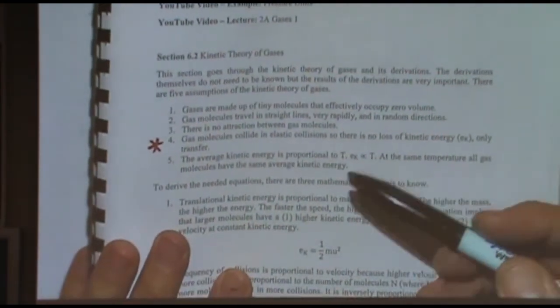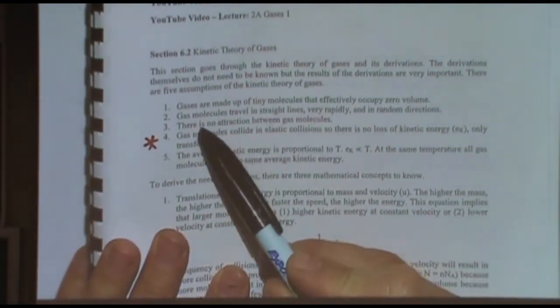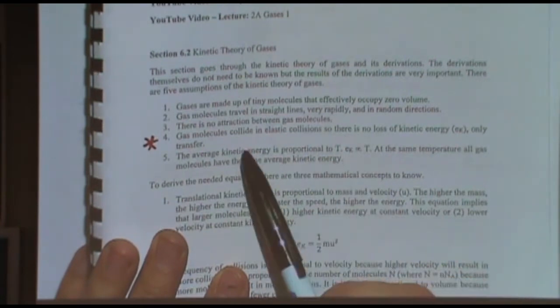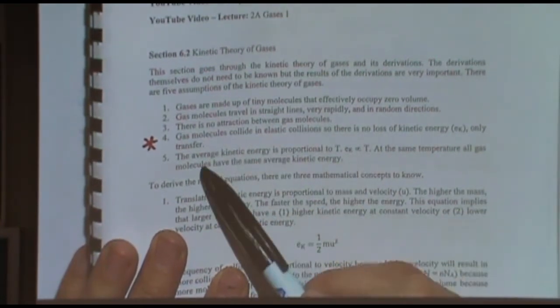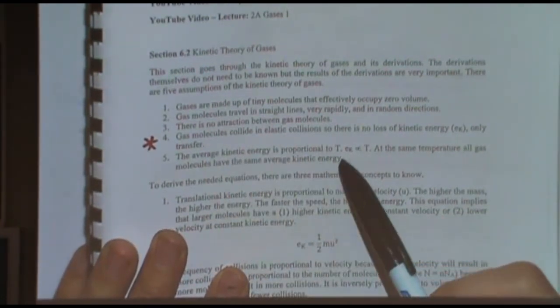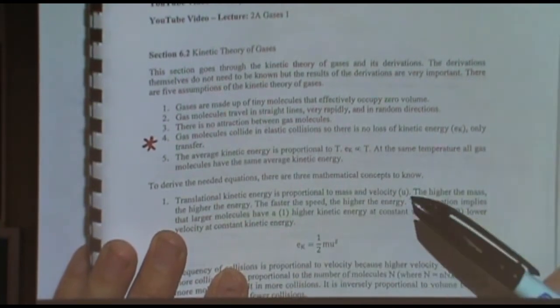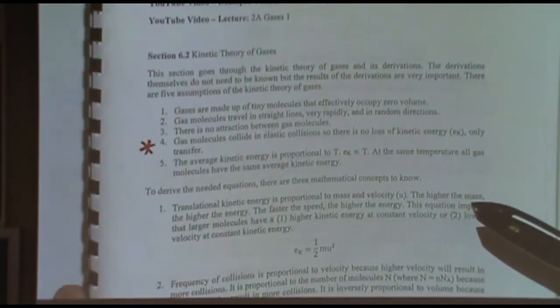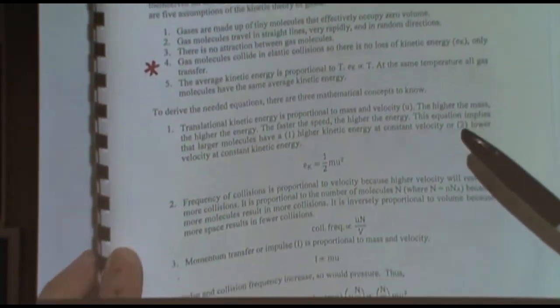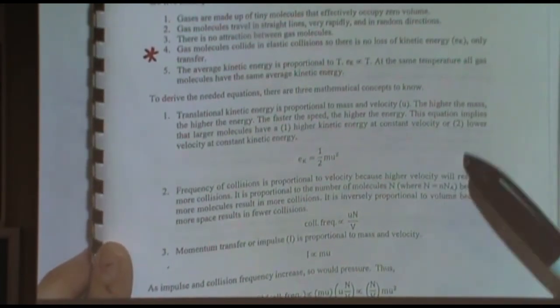So, first, this is page 50 of my reader. It's also in the text. Like gases are made up of tiny molecules, elastic collisions, energy is proportional to the temperature, things like that. There's five of them. That's pretty much the main thing to know.